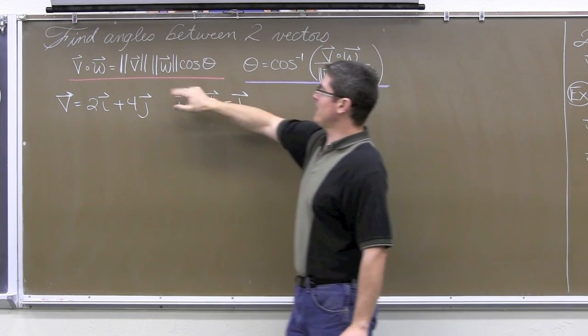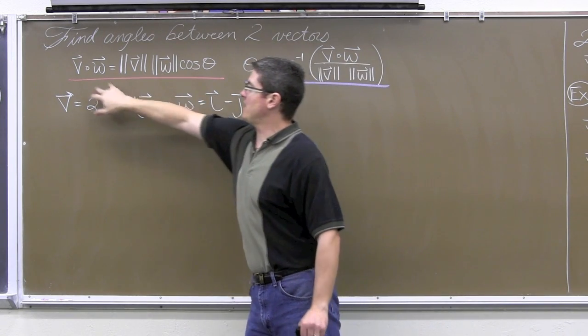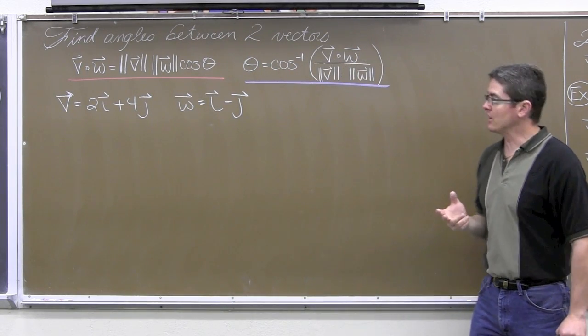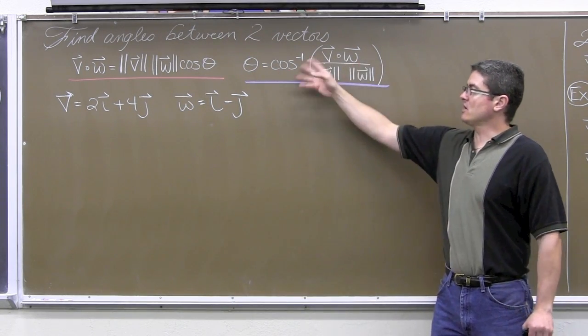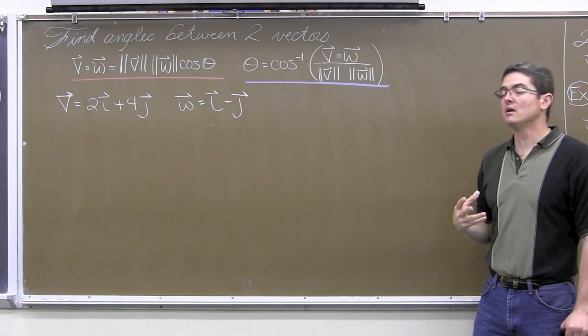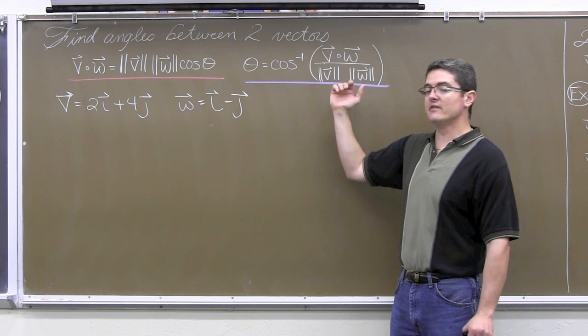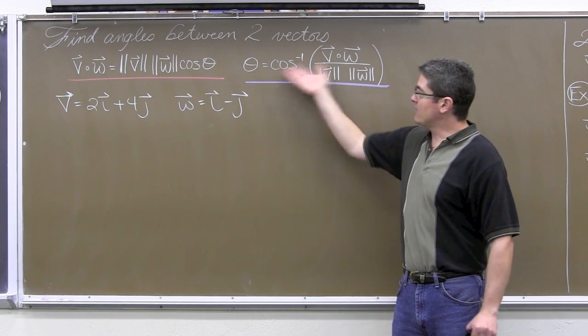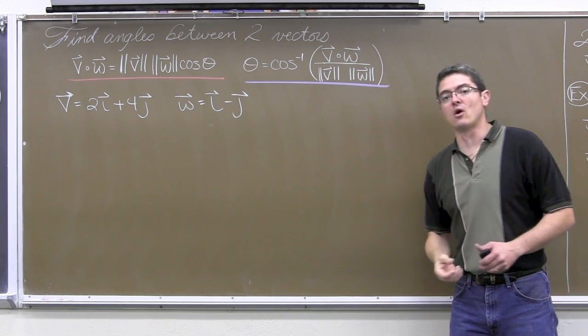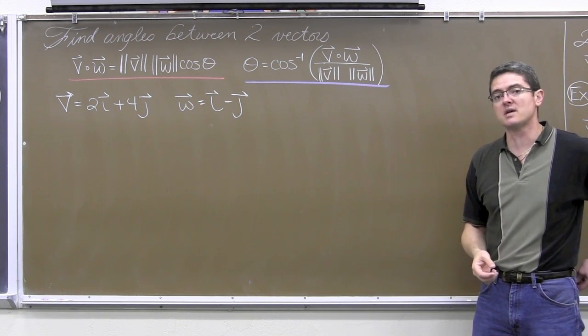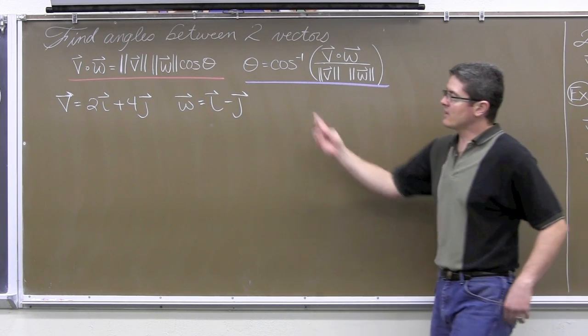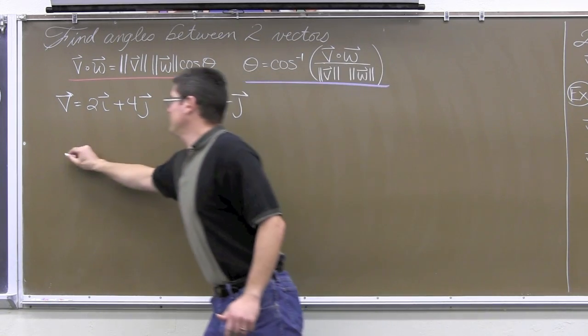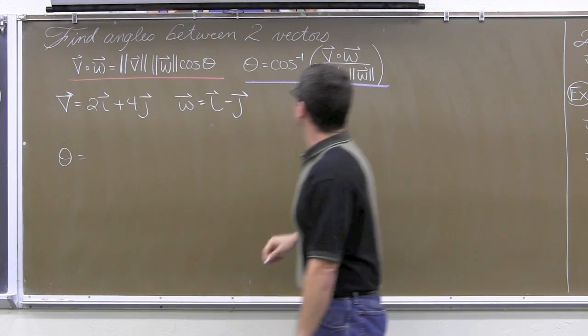Now, if we solve that for theta, we are going to divide both sides by these magnitudes and then to get the cosine function away from theta, we will have to do the inverse cosine. So, this is actually the format that you are going to be using most of the time, which is you are going to be given the vectors and being asked for the angle measure. And thus, you are probably going to use the one that is set up to equal theta more often than the one set up to equal the dot product.